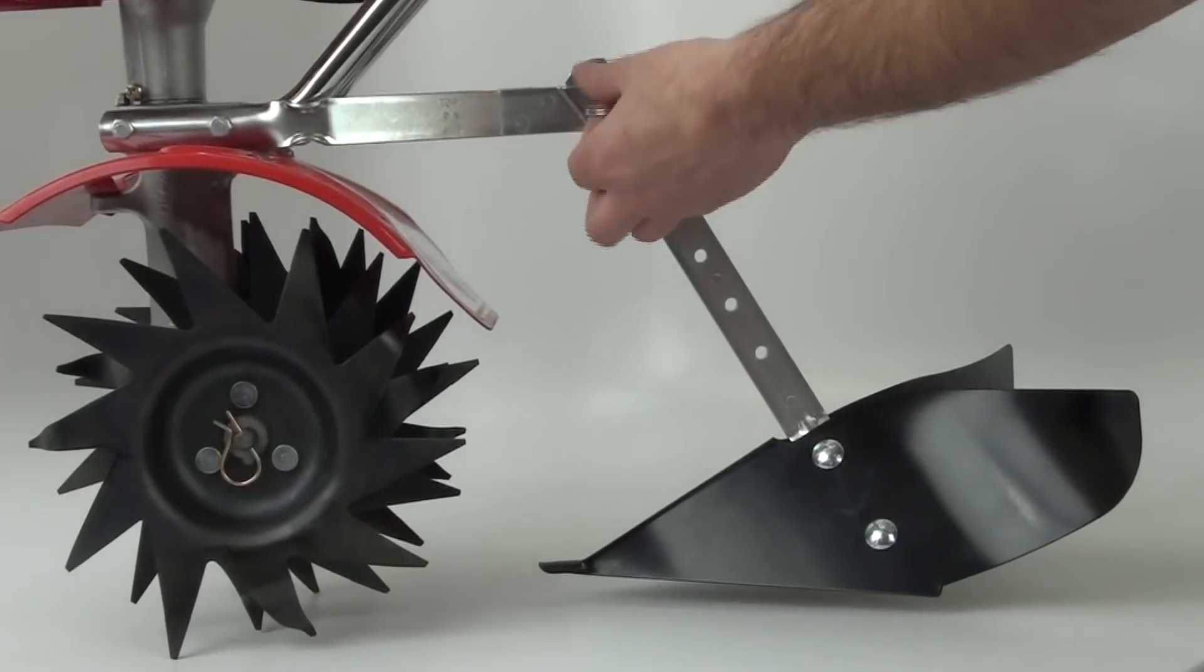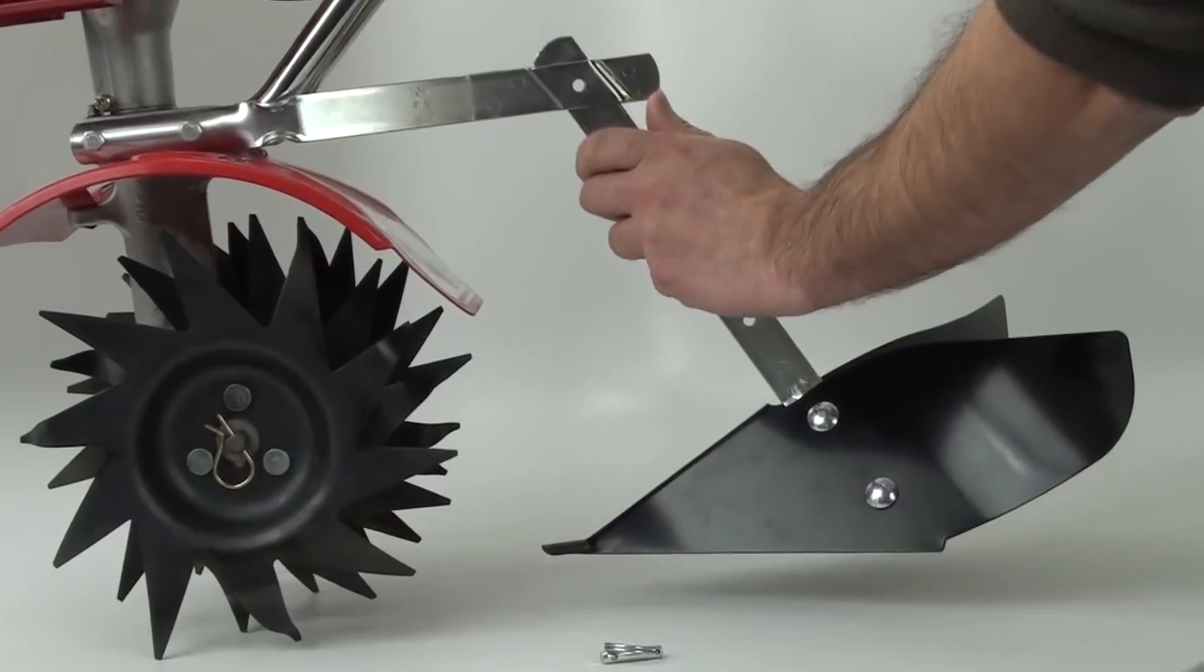When not using the plow, pull the lock pin out and slide the plow bracket out of the upper bracket.